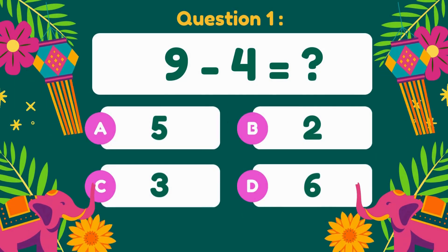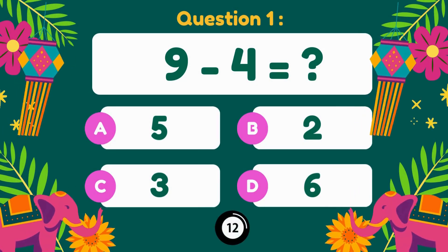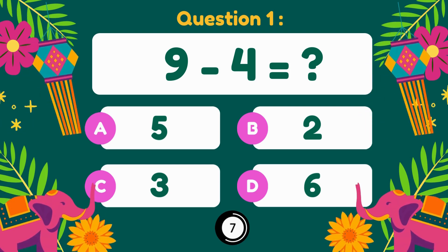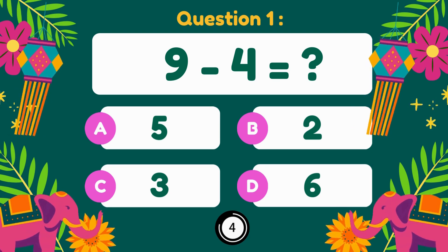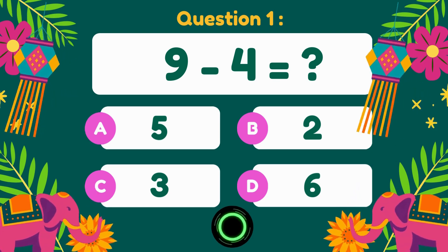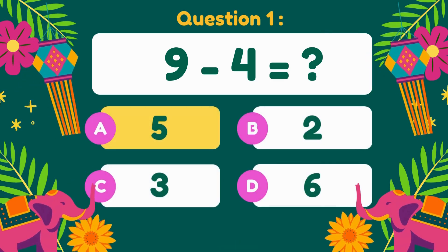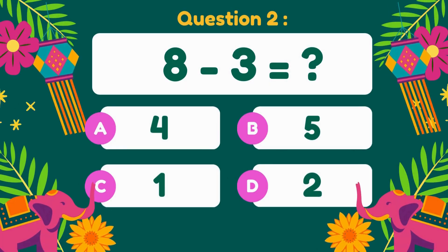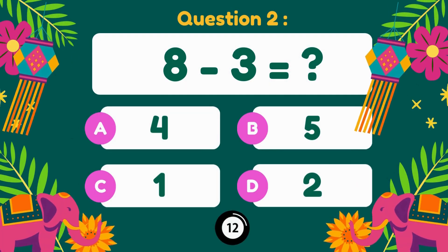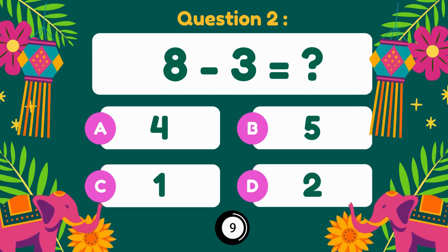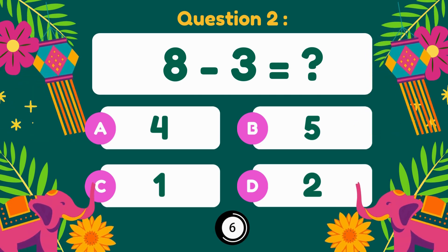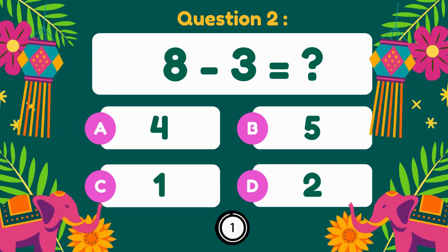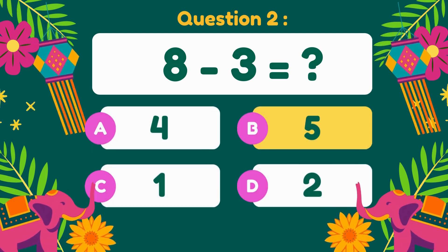9 minus 4. 9 minus 4 is 5. 8 minus 3 equals 5.